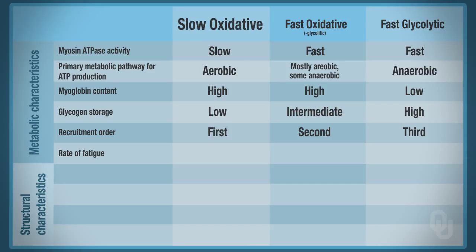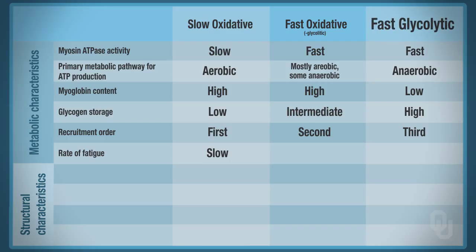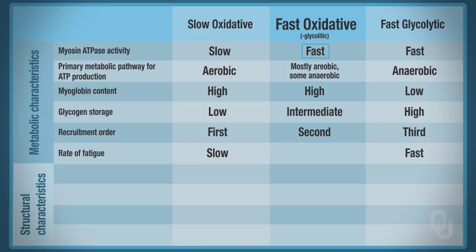The rate of fatigue: in an aerobic muscle fiber using oxygen, and because it's slow, cross-bridge cycling occurs at a slower rate so ATP is not utilized as quickly. Therefore the rate of fatigue is slow — slow oxidative fibers are fatigue resistant. Fast glycolytic fibers do cross-bridge cycling at a very fast rate, utilizing ATP quickly, so these fibers fatigue fast. The intermediate fast oxidative form is also fast but not as fast as fast glycolytic, so they're intermediate in how quickly they fatigue.